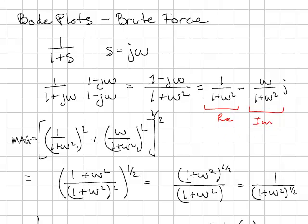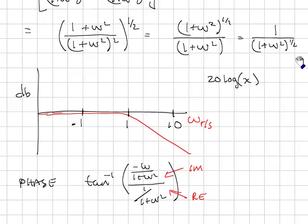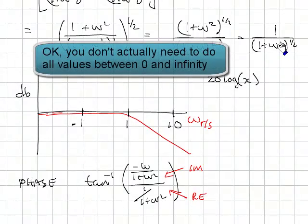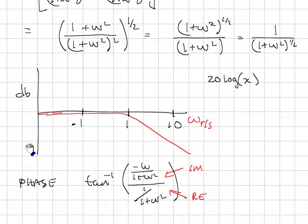Calculate the magnitude, then substitute in values of omega from 0 to infinity and plot them on the Bode gain axis. Remember the gain is 20 times log of the value, and the frequency axis is in a log base 10 of the frequency. That's why it's 0.1, 1, 10.